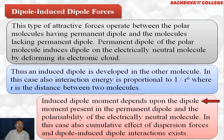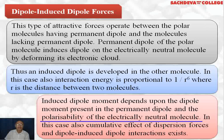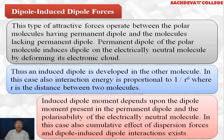The induced dipole moment depends upon the dipole moment of the permanent molecule — a highly polar molecule like water can induce more dipole moment in a non-polar molecule like iodine. It also depends on the polarizability of the electrically neutral molecule. Polarizability depends upon the size of the neutral molecule. For example, iodine is bigger in size so it is easily polarizable. Xenon gas is also larger and easily polarizable. Larger atoms are more easily polarizable and will develop an induced dipole more readily with the help of polar molecules.